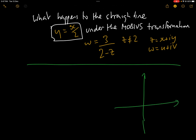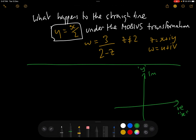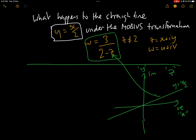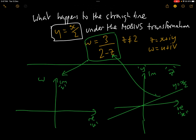We have the z-plane, where the horizontal axis is the real part x and the vertical axis is the imaginary part y, and we have the line y equals x over 2. What the question is asking is: when we put this line through the transformation w equals 3 over (2 minus z), what comes out in the w-plane, where the axes are the real u and imaginary v? We need to find what all the points on y equals x over 2 form under that Möbius transformation in the w-plane.